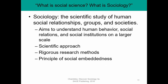Sociology specifically — to separate ourselves from psychology — sociology is the scientific study of social relationships, groups, and societies. We study groups, we study interactions between people. Psychologists study what's happening inside one person's brain — that's most of psychology. Sociologists study what happens between people. We use a scientific approach with rigorous research methods and tend to emphasize social embeddedness — we look at the interactions between people.